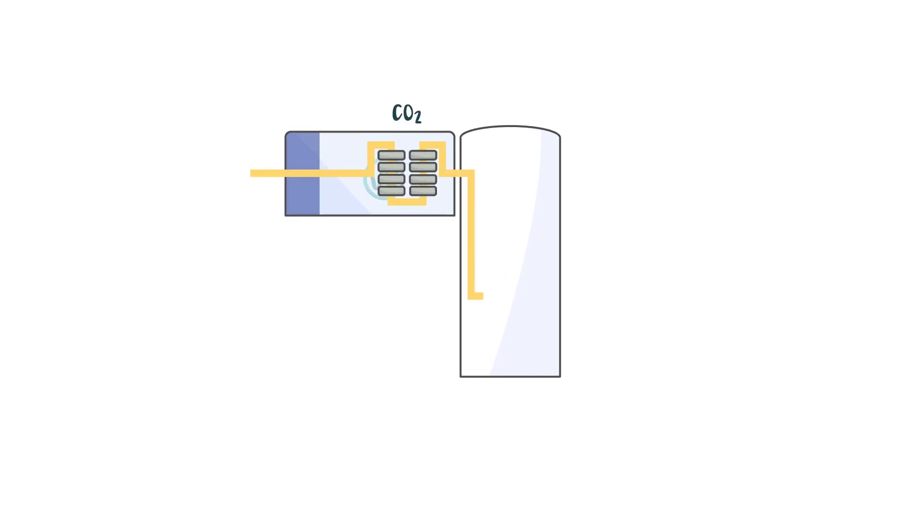First, filtration of the impurities and CO2. Secondly, a cryogenic distillation column utilizing very low temperatures. This column efficiently separates the air gases from the methane, ensuring compliance with local utility pipeline specifications.